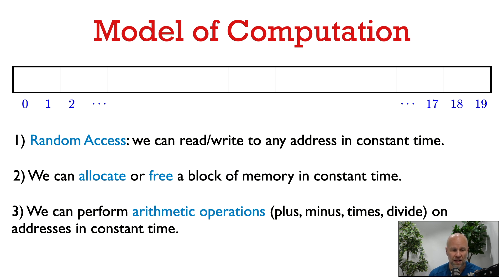The second is that we can allocate or free a block of memory, a contiguous group of words, in constant time. So allocating memory is basically just designating a block of memory as taken, so it is not used by other processes. So it's just saying, hey, I'm using this memory, nobody else can use it, I'm reserving this block of memory right now.